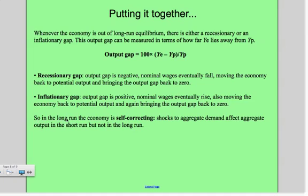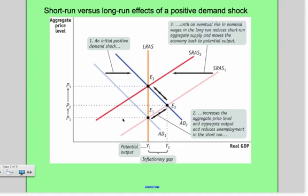Keep in mind that in the long run, the economy is going to be self-correcting. We talked about how the economy is correcting itself over time, getting back to long-run aggregate supply.